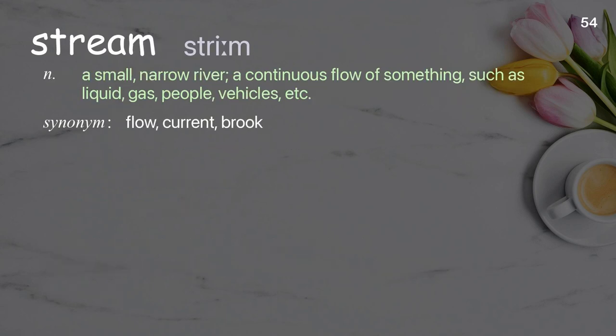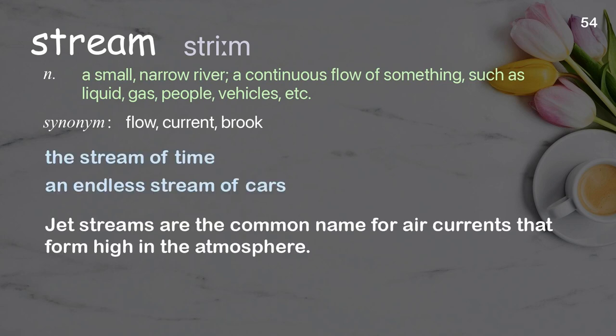Stream: a small, narrow river; a continuous flow of something, such as liquid, gas, people, or vehicles. Examples: the stream of time, an endless stream of cars. Jet streams are the common name for air currents that form high in the atmosphere.